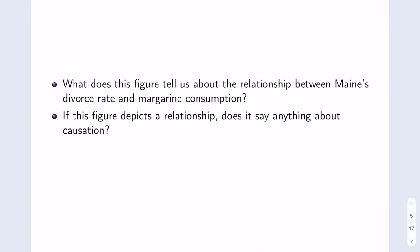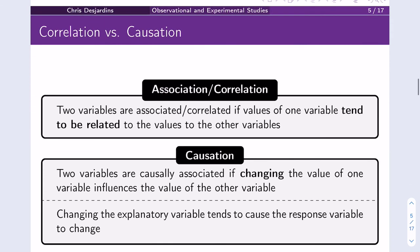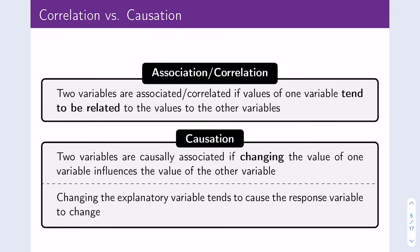But does this figure actually tell us anything about causation? Is the divorce rate causing margarine consumption to decrease, or is margarine consumption causing the divorce rate in Maine to decrease? If it were the latter, that would be quite the public health message — consuming less margarine means you won't get divorced. However, it seems like we really just have a strange association or correlation. That figure actually comes from a website called Spurious Correlations, which has many fun, unexpected correlations.